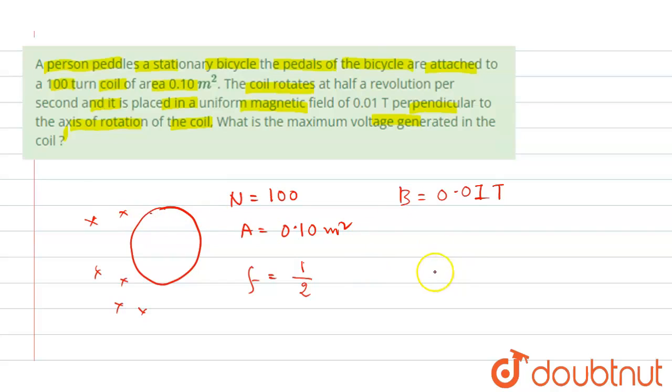The value will be given as E equals to N A B omega, where N is the number of turns in the coil, A is the area of the coil, B is the magnetic field strength, and omega is the angular velocity with which the coil rotates.